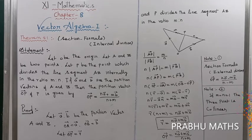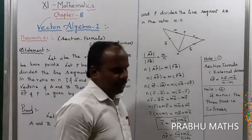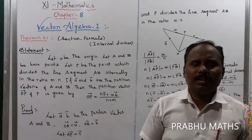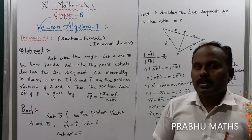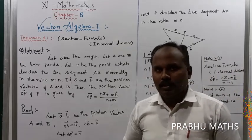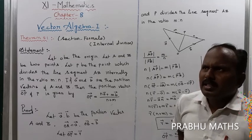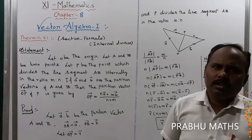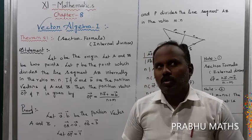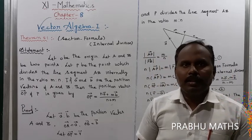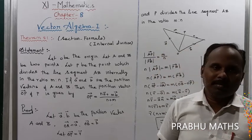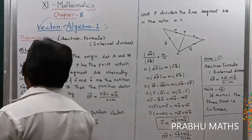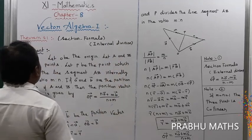Section 8.1 covers the section formula: internal division, external division, and the midpoint formula. You have already studied coordinate geometry — the section formula has three cases: M greater than N (first case), M less than N (second case), and M equal to N (midpoint). The midpoint formula is X1 plus X2 divided by 2, Y1 plus Y2 divided by 2. Now we prove the section formula using the vector method.